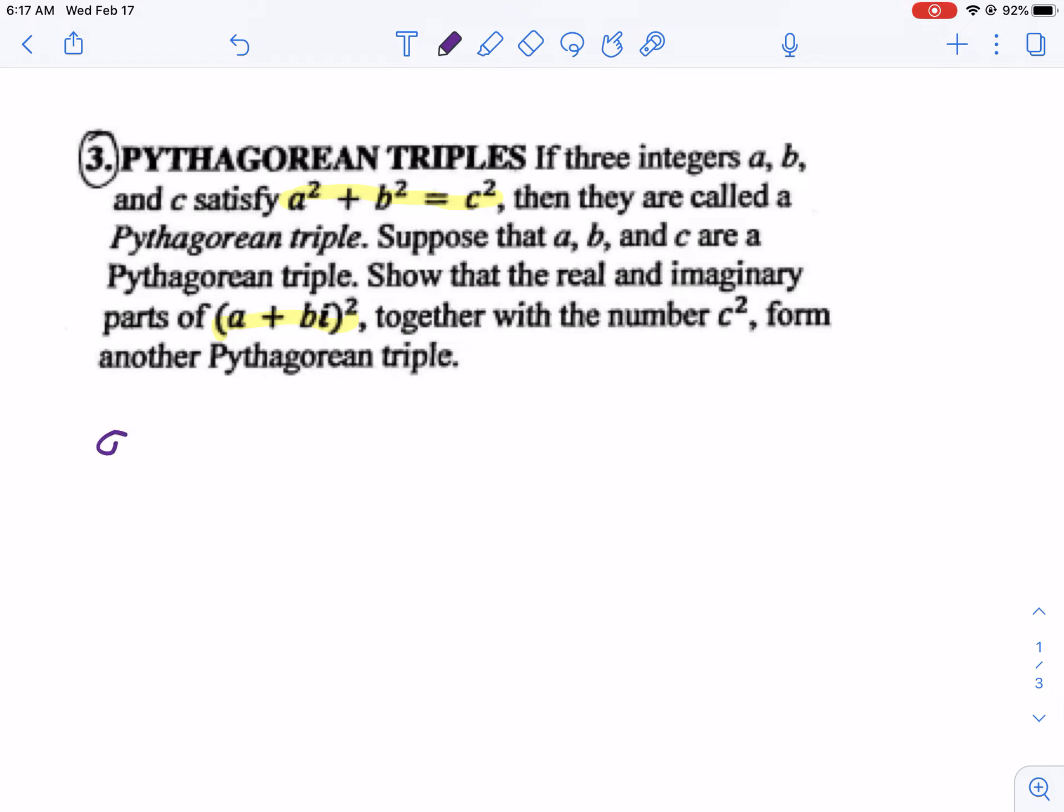I'm going to take A plus BI. I'm going to square that. Then I'm going to get A squared plus 2ABI plus B squared I squared. Remember I squared is negative 1. So we're going to have A squared plus 2ABI minus B squared.